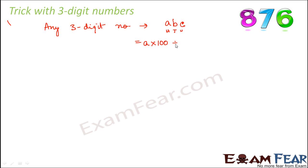So this can be written as A×100 + B×10 + C×1. That is equal to 100A + 10B + C.